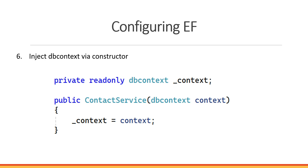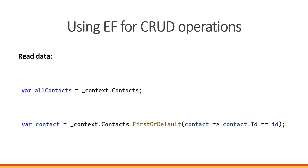The last configuration step is adding something in our Program.cs file — this is how we configure dependency injection in .NET Core. By doing this, the DBContext class will be available to all parts of our application. We're using SQL Server and the connection string is coming from the appsettings.json file. After configuring it, we can start using it — in our service we'll create a private read-only field, inject it via the constructor, and start using it.